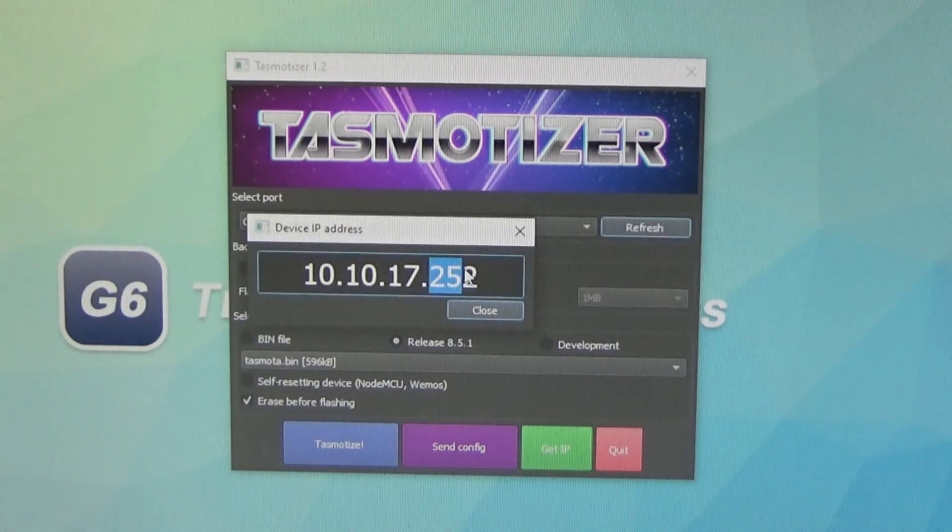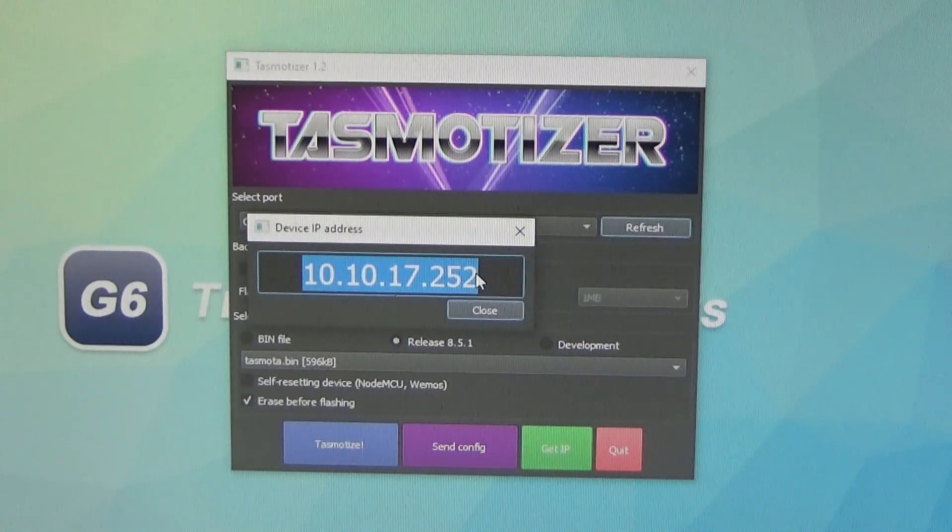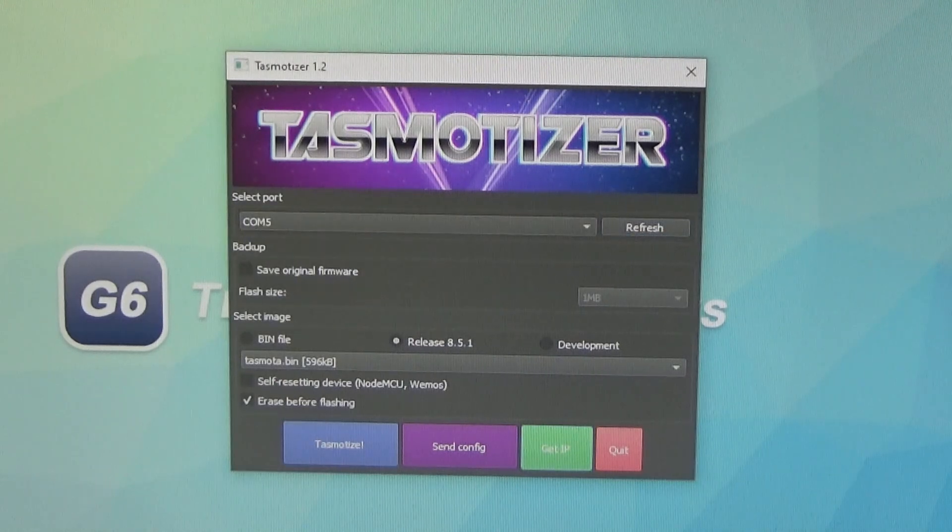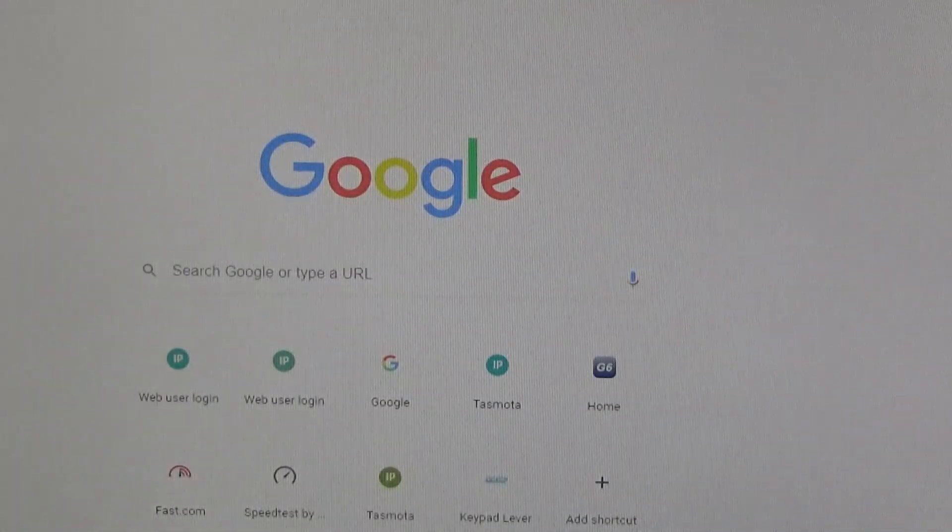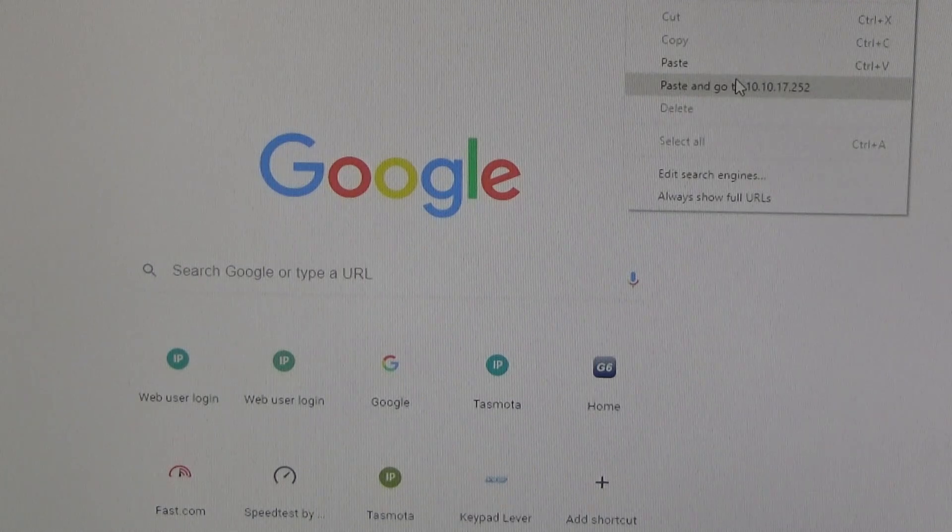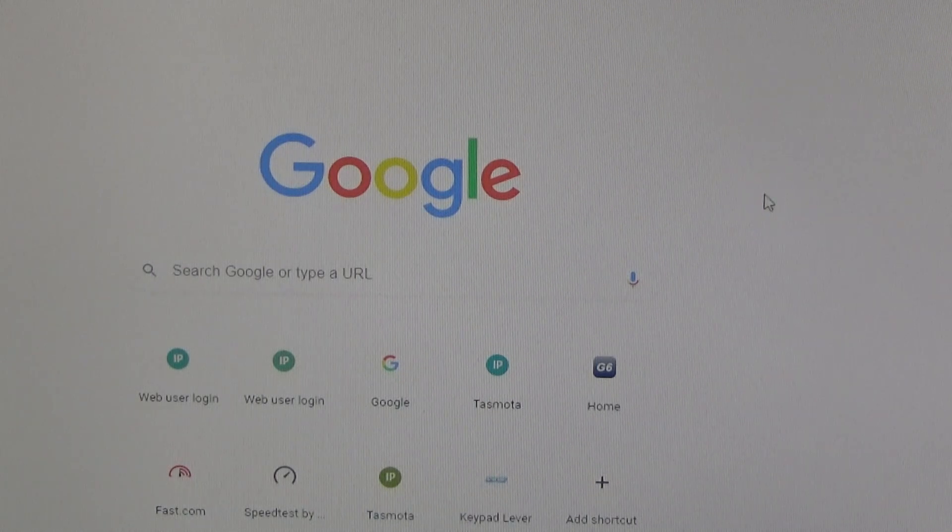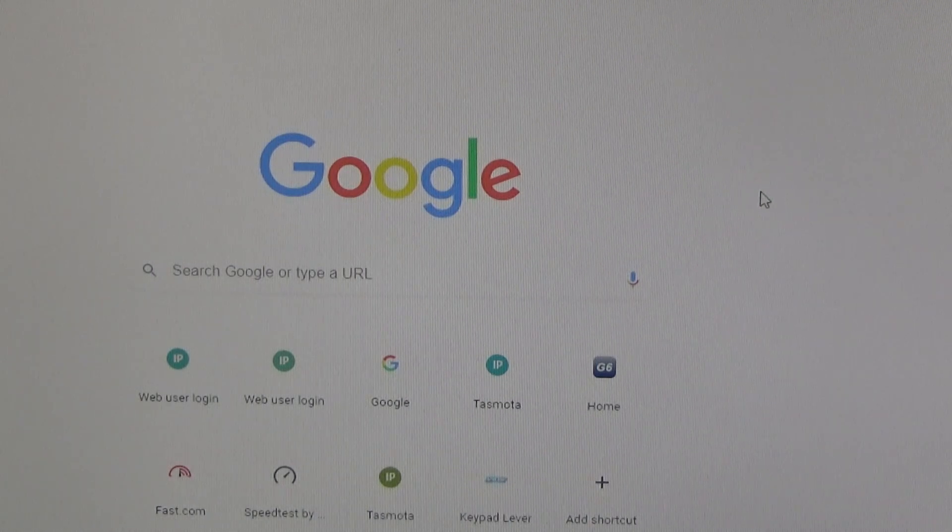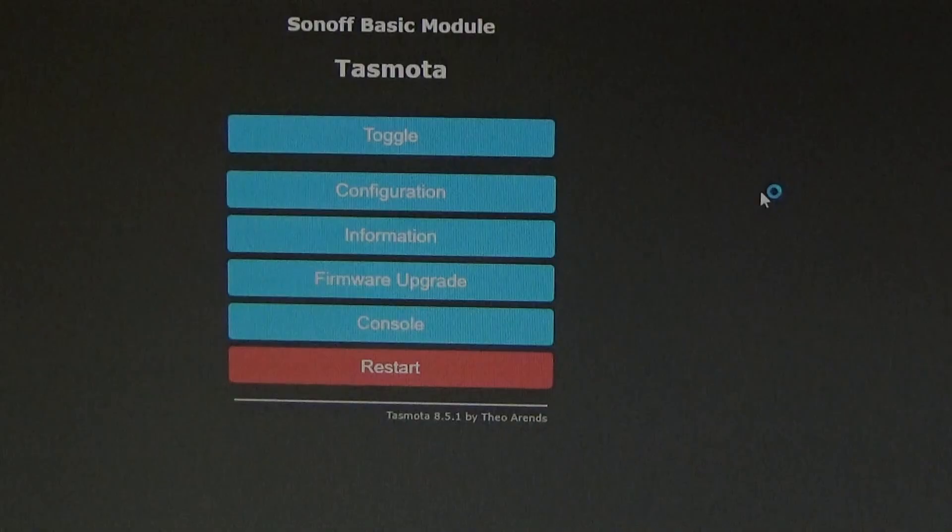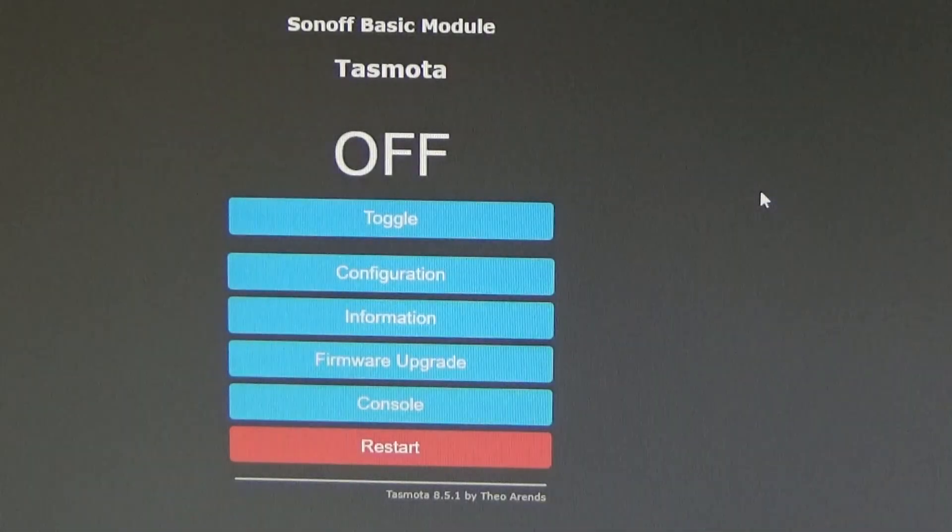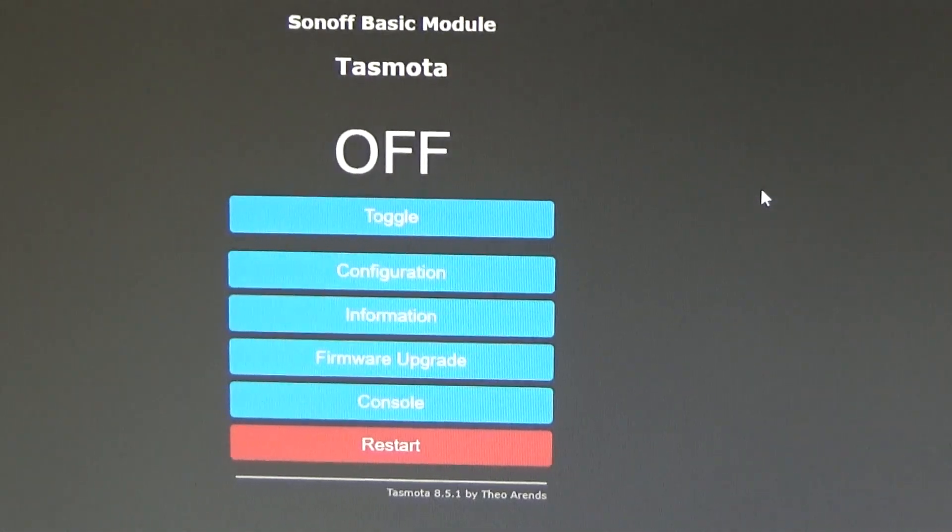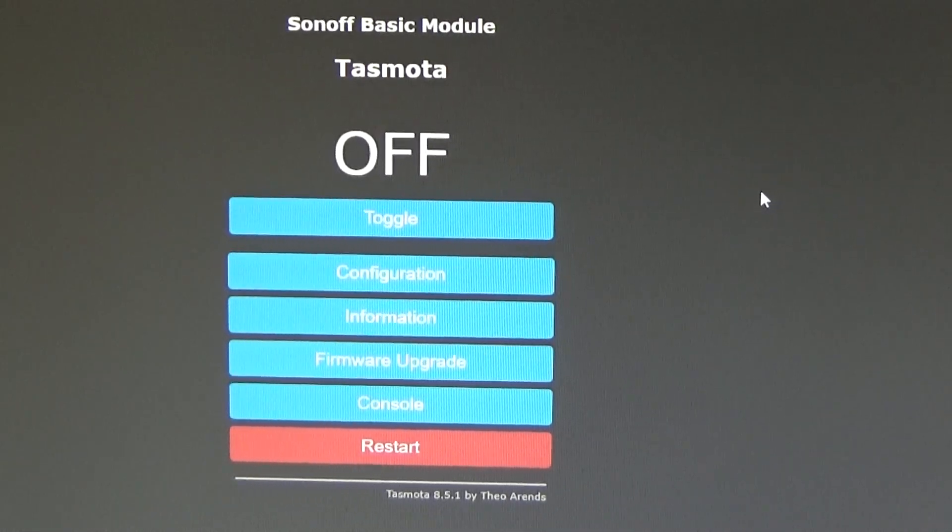So now we can just click this green get IP button. And here's our IP. So we can just copy that. And then if we go into Chrome or some other web browser, you can paste that IP address in there. And then we should be able to access the web interface of our Sonoff with our new Tasmota installation. And here we go.